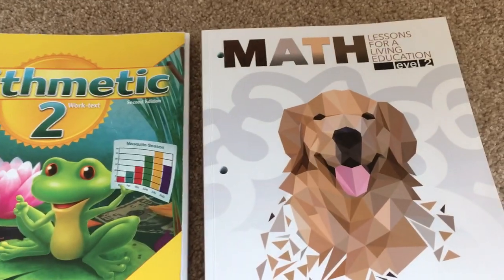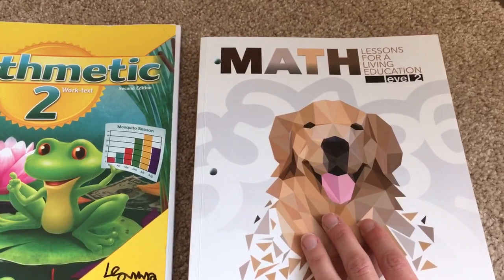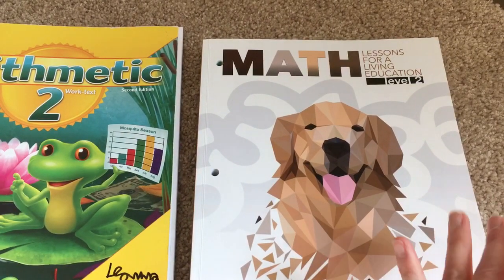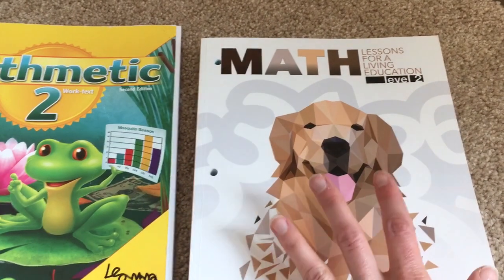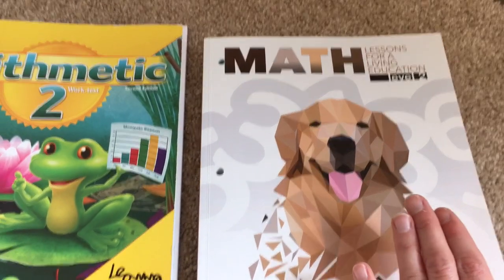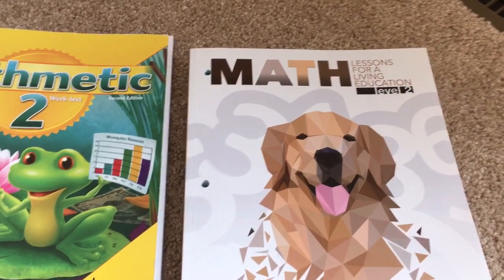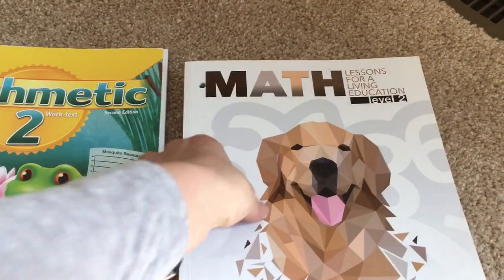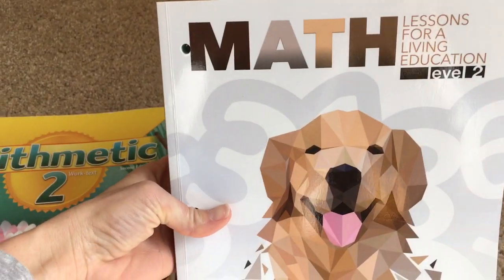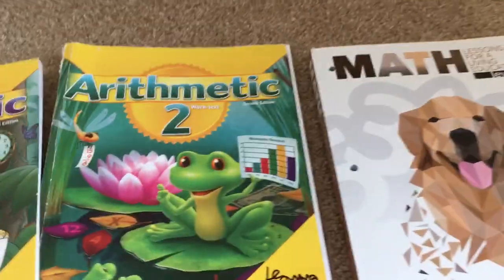Also, Math Lessons for a Living Education, which is by Master Books. The reason why I have Level 2 here - they have on their website Level 1 for first grade and Level 2 for second grade. However, from reviews and looking through the books, developmentally and in difficulty, Level 1 is more of a kindergarten level and Level 2 is more of a first grade level. I'll show you how they compare.